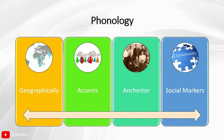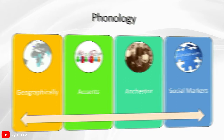Different pronunciations also depend on accent. For example, we have British accent, American accent, or Australian accent. The third factor affecting phonology is ancestry — because language is arbitrary, our ancestors also affect the development of phonology itself. And the last factor is social marker, which refers to community.